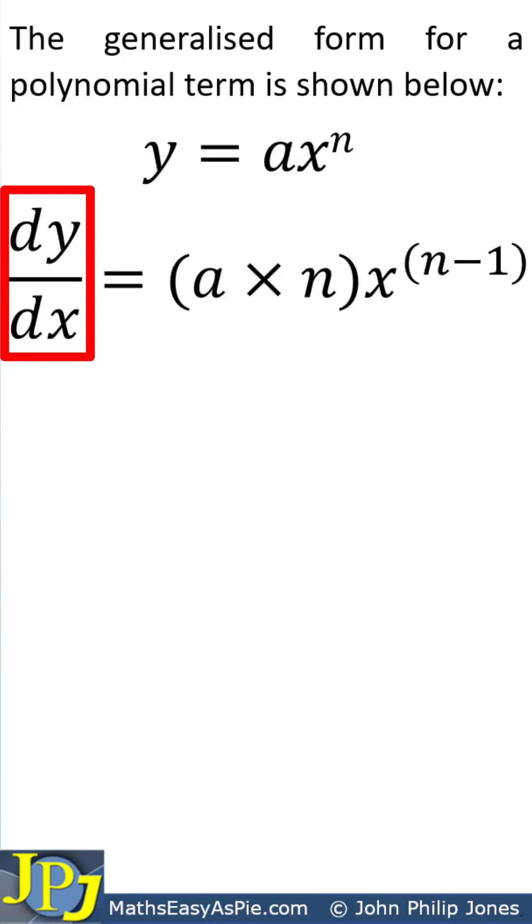We write dy/dx equals, and then you can see here it is a times n. That is this a multiplied by this n. Then we write down the x, and here you can see this is n minus 1, which means we reduce whatever this index is, whatever this power of x is, by 1.